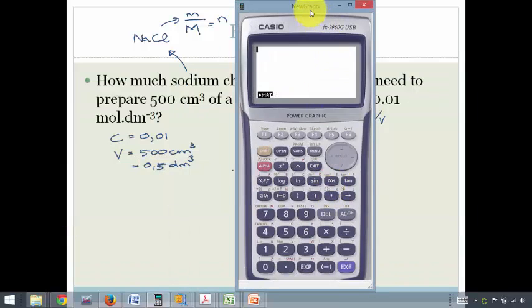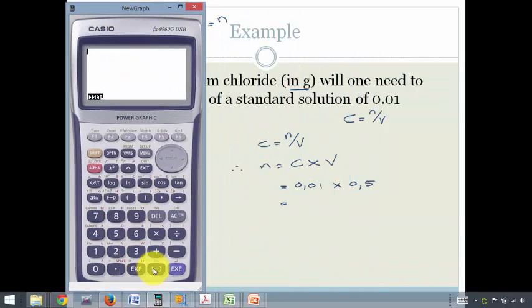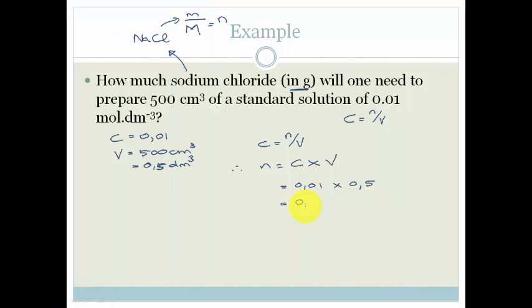So let's get the calculator out. There it is, move it over. And we go 0.01 times 0.5 and it comes to 5 times by 10 to the minus 3, or 0.005.